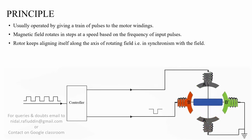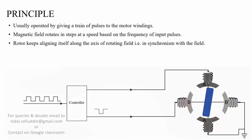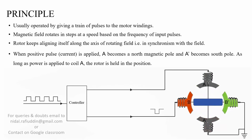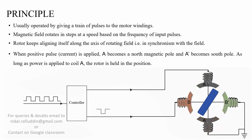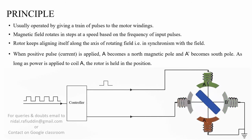While the magnetic field rotates in the air gap, the rotor keeps aligning itself along the axis of the rotating field — that is, in synchronism with the field. Shown here is a four-pole stepper motor with windings A, A-dash, B, and B-dash. When a positive pulse or current is applied to coils A and A-dash, making A a north magnetic pole and A-dash a south magnetic pole, this aligns the rotor along A–A-dash. As long as power is applied to coil A, the rotor is held in this position.